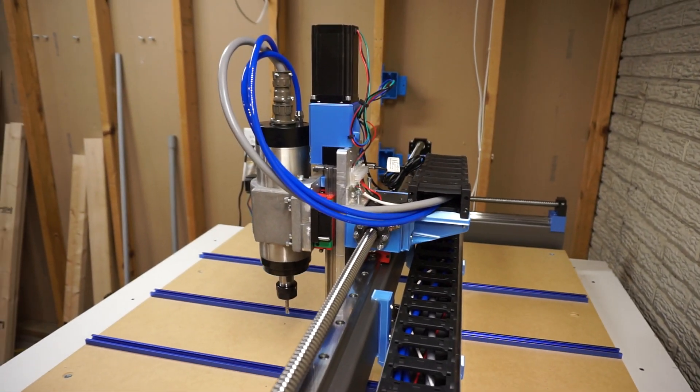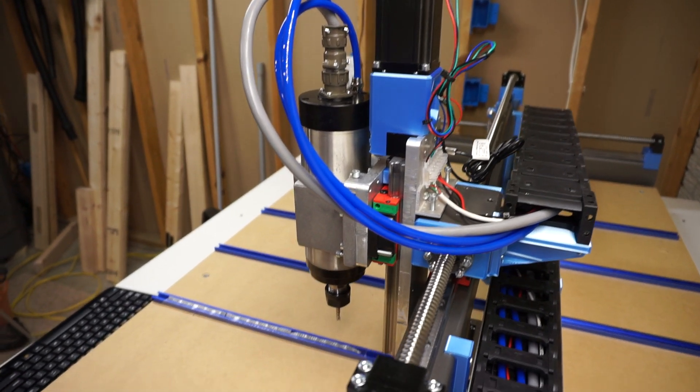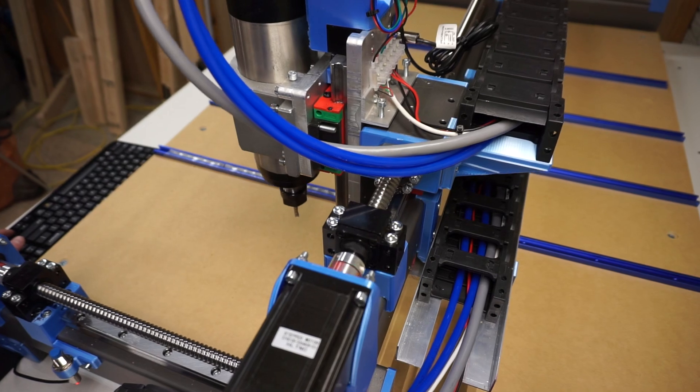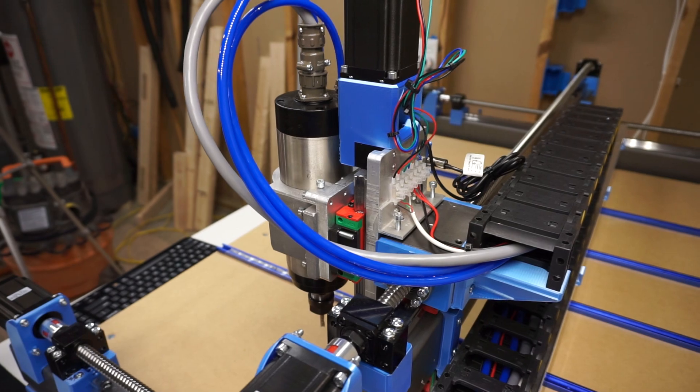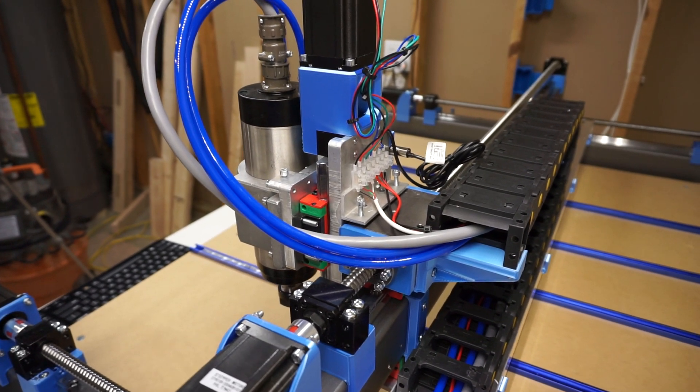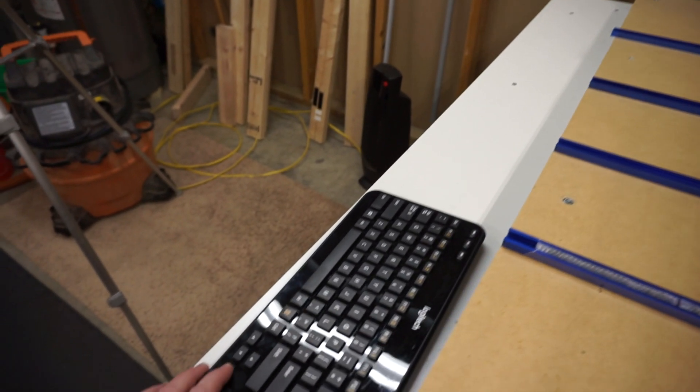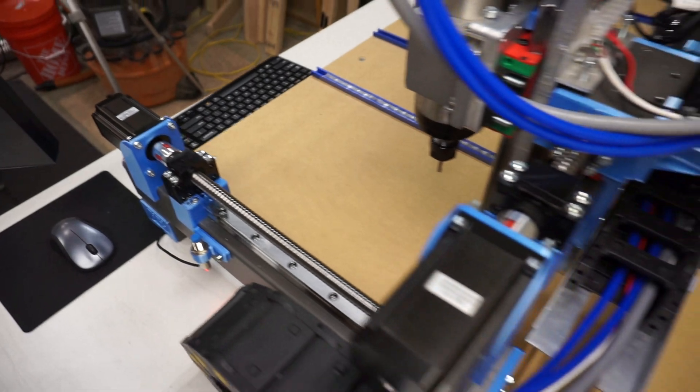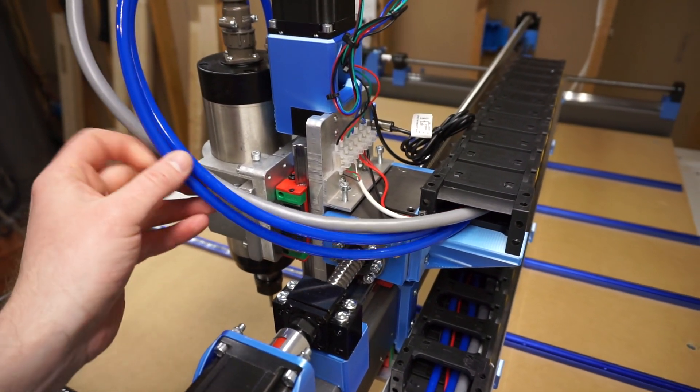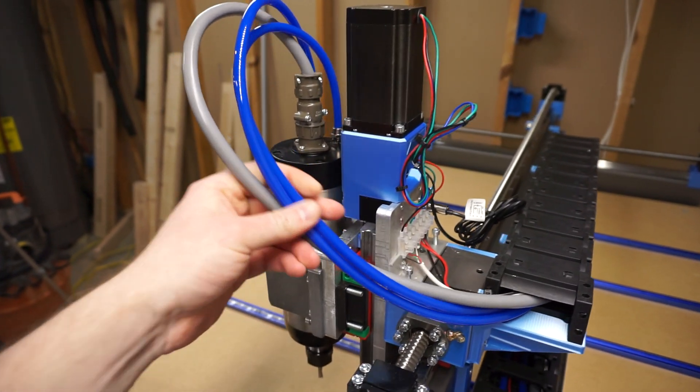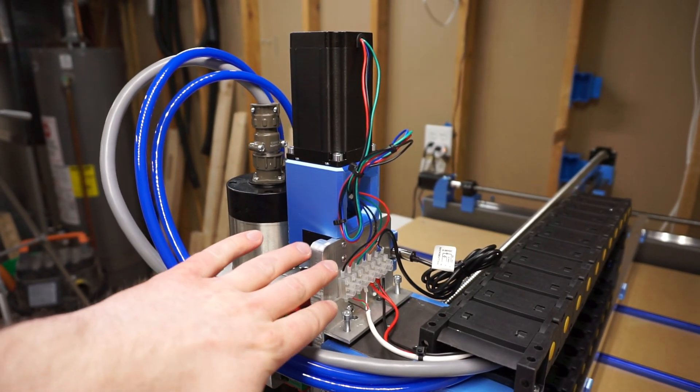We'll just kind of come around back here and bring the gantry over. One cool thing here is that you can set your limits in LinuxCNC. So you really don't need max limit switches. At least in my opinion. I mean if you want them go ahead and do your thing. But I can no longer, if I hit the arrow over here I can't jog this any further because it's at its max limit. So it's kind of nice. I will probably get these hoses secured a little bit better as they go into the cable chain.